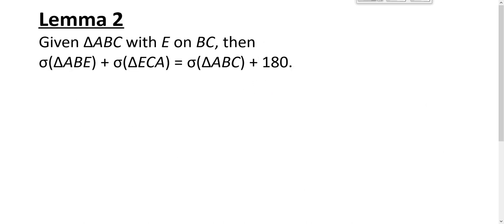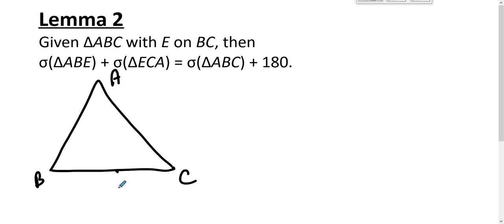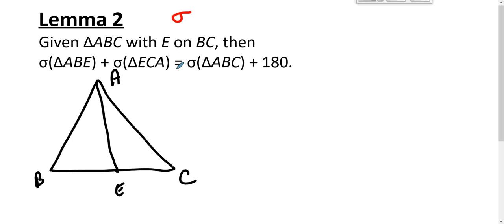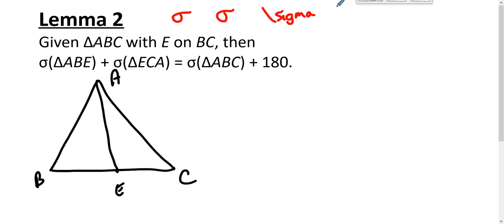Lemma 2. Given triangle ABC with point E on segment BC. Here's new notation: a lowercase sigma. You're familiar with capital sigma, but this is lowercase sigma. If you're typesetting in LaTeX, this is backslash sigma. In Microsoft Word's equation editor, lowercase sigma also exists. Lowercase sigma means the sum of the measures of the angles of a triangle.